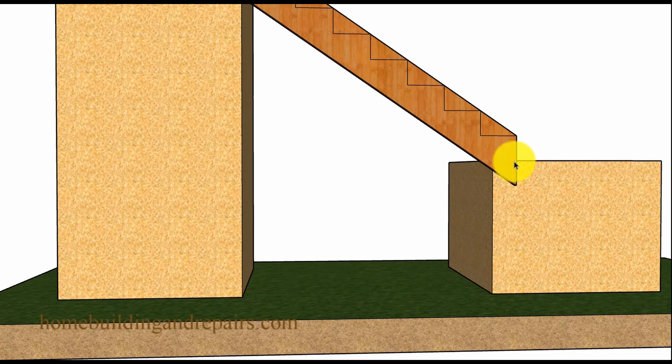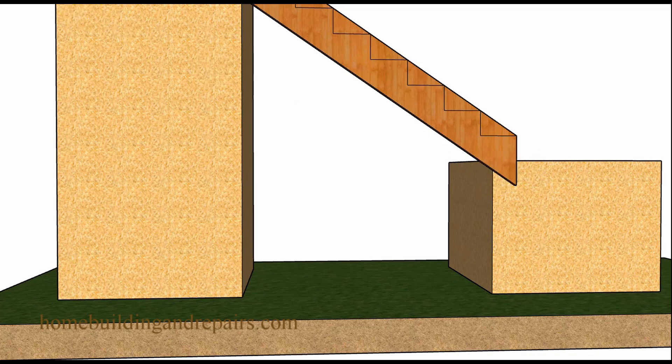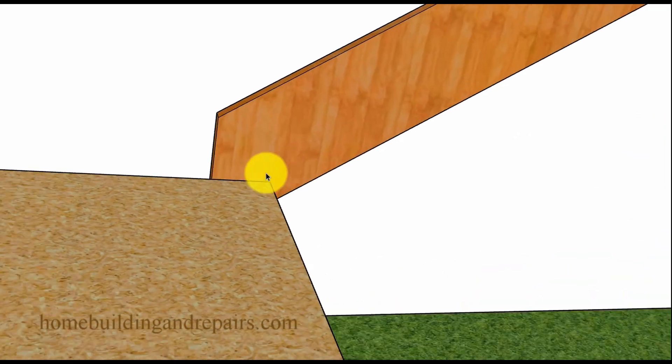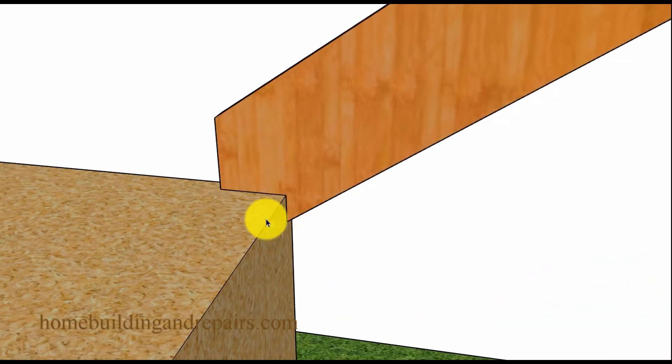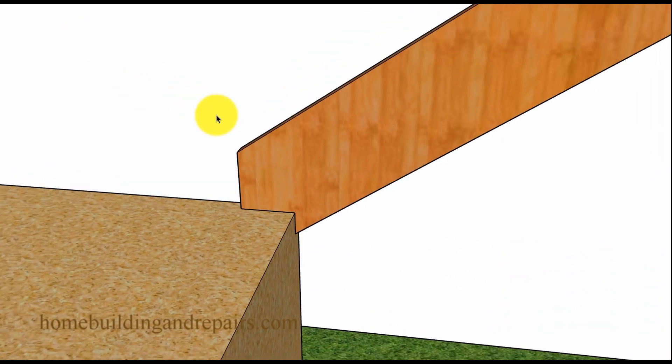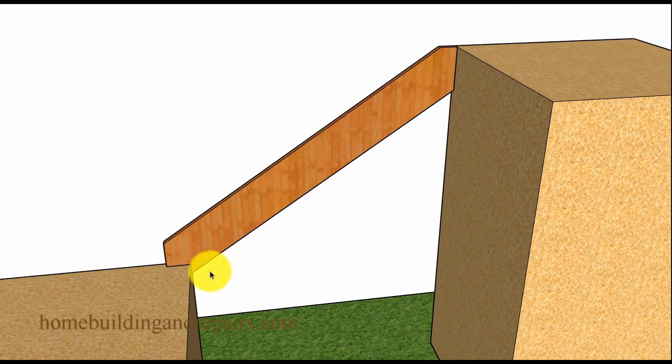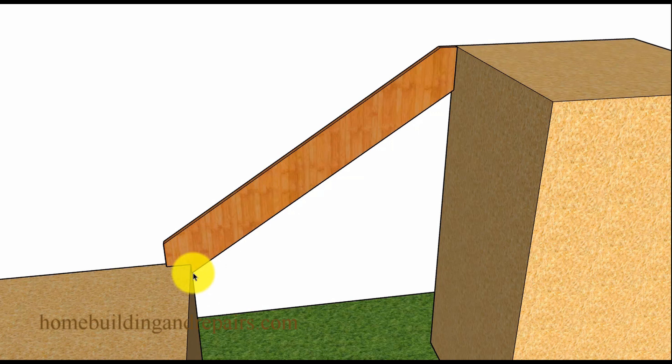And in this example, we have modified the bottom. We do not have our level cut here for the bottom of the stringer because we might need to notch it around the landing. Something like this, of course. And again, it all depends on what you're doing. If you're dealing with a finished product, something that is going to be exposed, painted or stained, then something like this is going to help you out a lot.